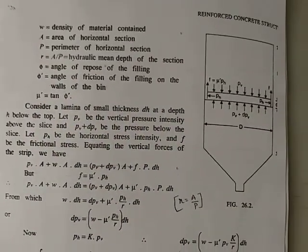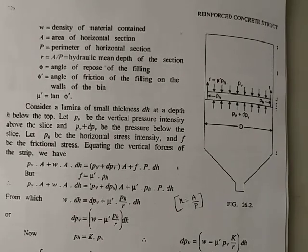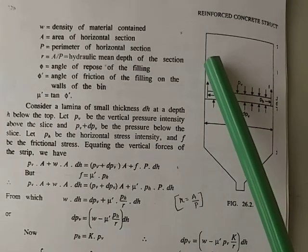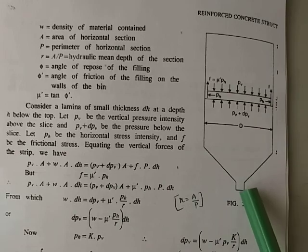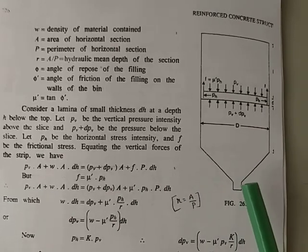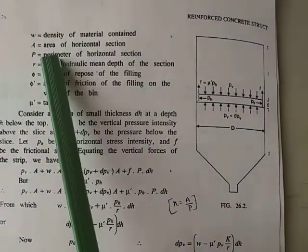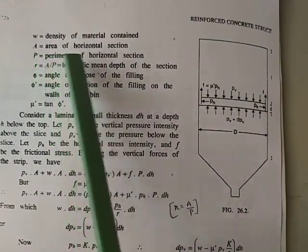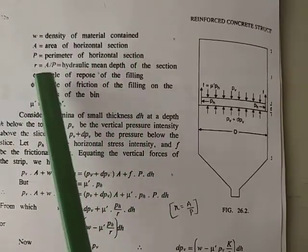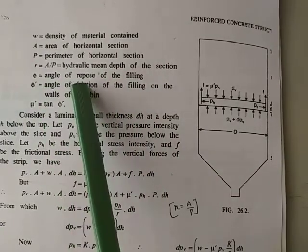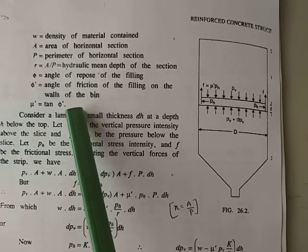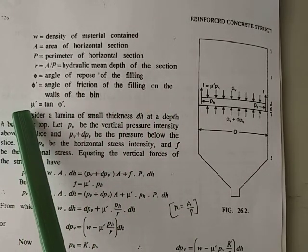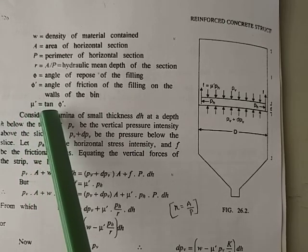Due to this, Rankine's or Coulomb's lateral pressure theories cannot be directly applied. A silo structure has cylindrical walls, and the portion at the bottom is called the hopper bottom, with an opening at the base. Let w be the density of the material, A the area of the horizontal section, p the perimeter, R the hydraulic mean depth, φ the angle of repose of the filling material, and φ' the angle of friction of filling on the bin walls.